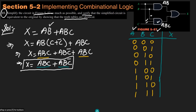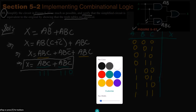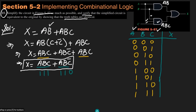From the expression ABC + ABC', I can see the output is 1 only for the binary values where A=1, B=1, C=1 (i.e., 111) and A=1, B=1, C=0 (i.e., 110). For all other input combinations, the output X is 0.